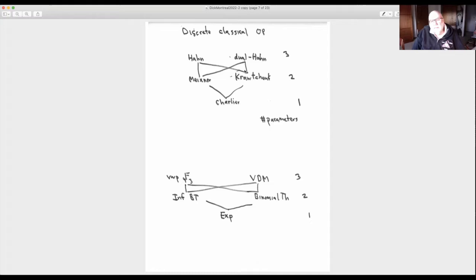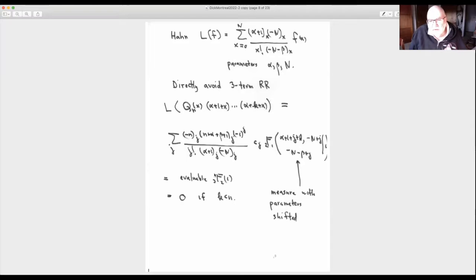So here's a discrete part of the Askey scheme. We have these five orthogonal polynomials, Charlier, Meixner, Krawtchouk, Hahn, and dual Hahn. All of these have a purely discrete measure. And as you move up, you become more general and you have more parameters. Measures are summation theorems. The measure for the Charlier is just an exponential sum. The measure for the Krawtchouk is a binomial theorem. For Hahn is Vandermonde's theorem. The measure for the dual Hahn is something called the very well-poised 4F3.